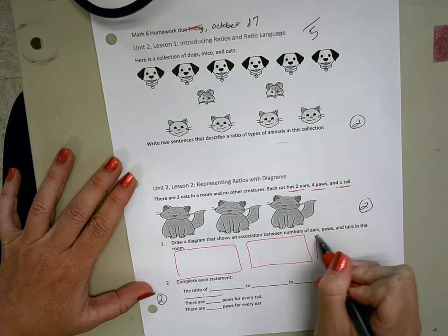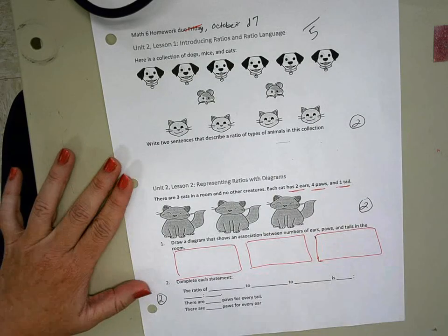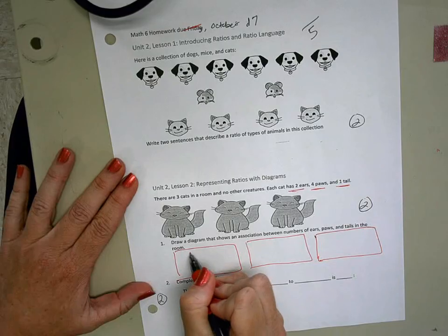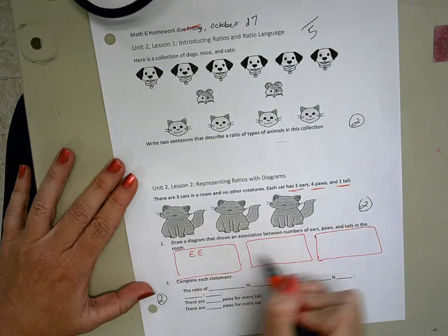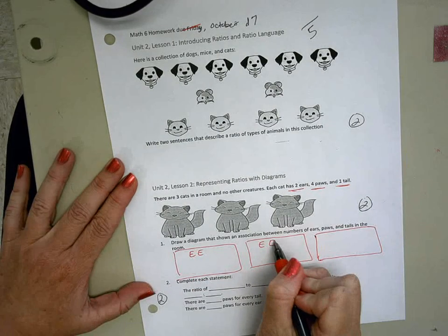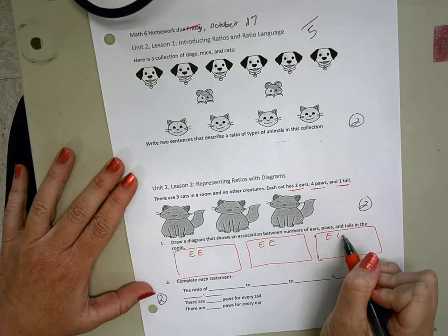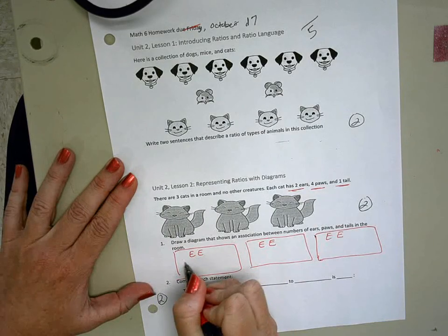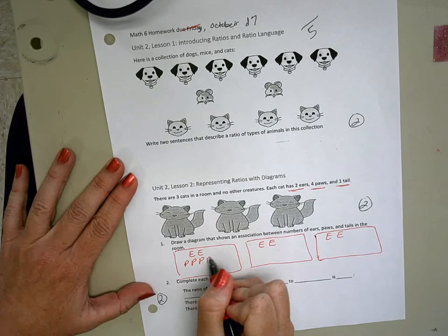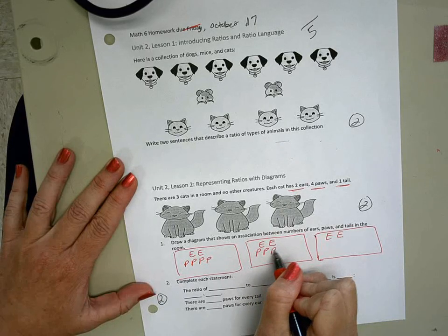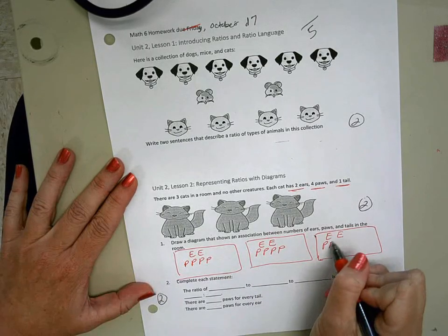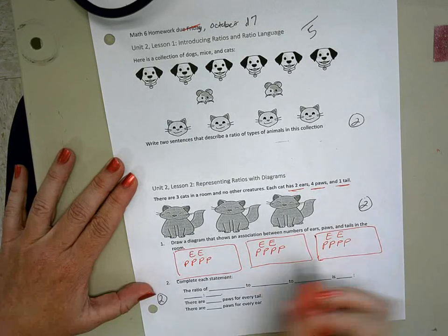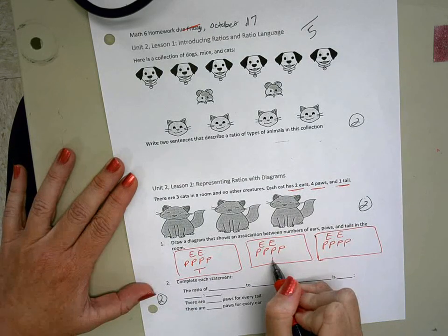So I'm gonna do one cat, two cats, three cats, and each cat has two ears so I'll put E twice, four paws so I'll put Ps four times for each cat, and of course each cat has one tail.